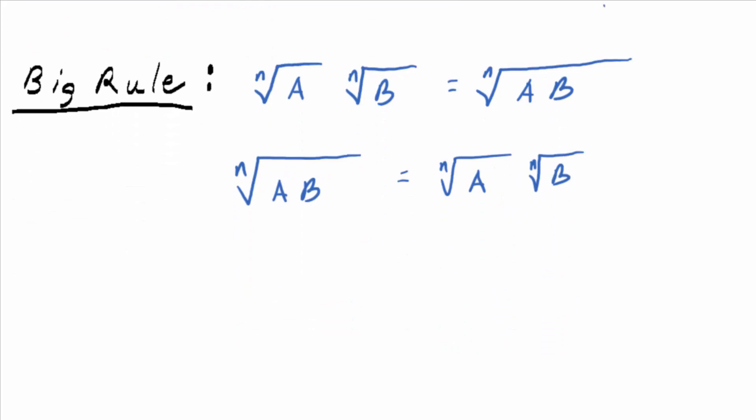And the way I justified it the other day, well, I didn't prove it to you, but I made you believe it by just thinking of it in terms of, well, what if you take the square root of four times the square root of nine? According to this rule, what should that be equal to? The square root of four times nine, right?